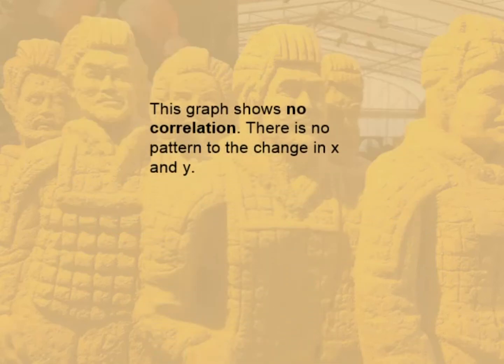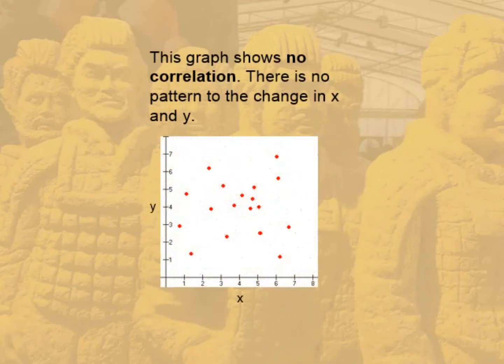And finally, this is a graph which shows no correlation. There's no pattern in the change of X and Y. There's a little bit of a group in the middle, but it's not a correlation between X and Y variables.